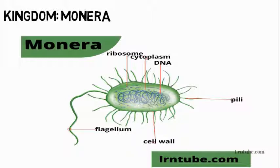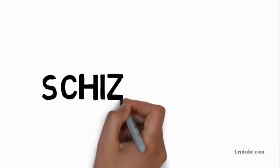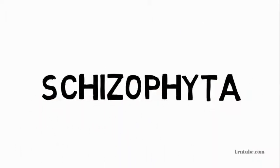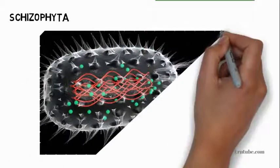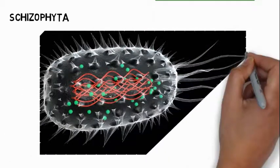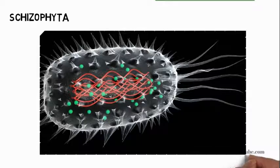This kingdom is divided into two phyla: Schizophyta and Cyanophyta. The characteristics are almost the same as the general characteristics, but there are a few keywords that will help you differentiate between them. The general characteristics of Schizophyta are almost the same as Kingdom Monera, since they are simple living organisms that belong to Kingdom Monera.